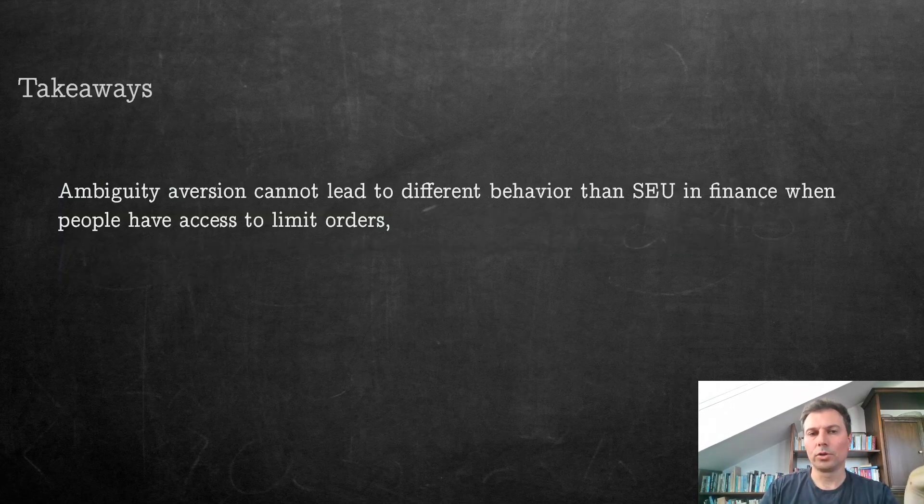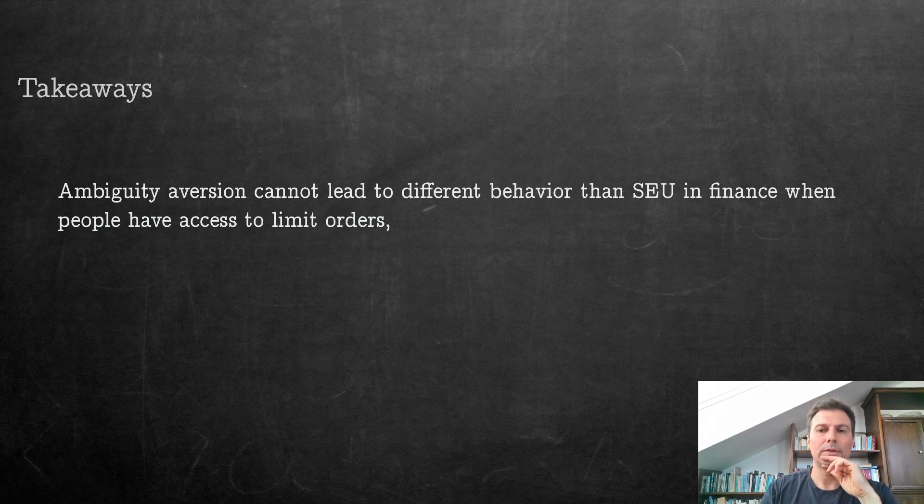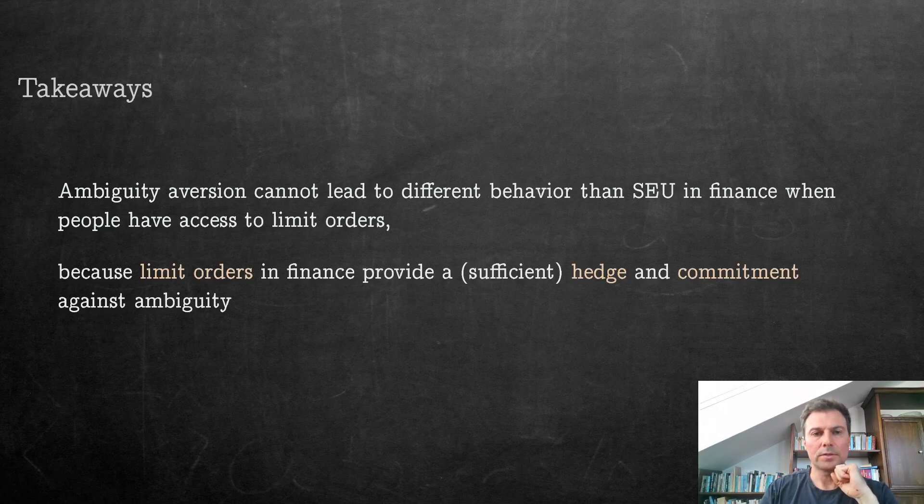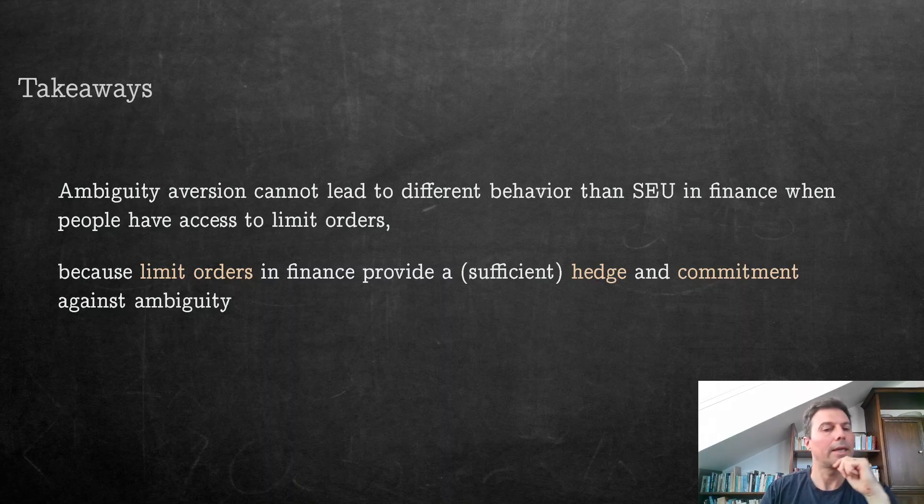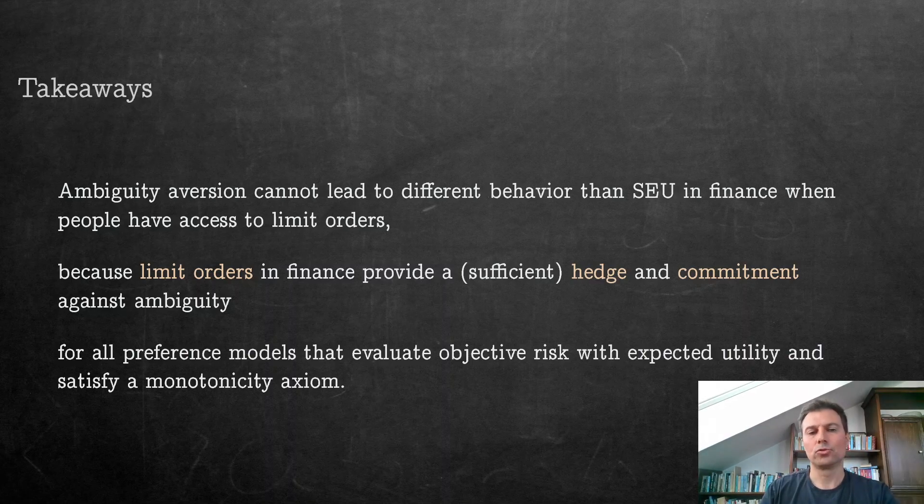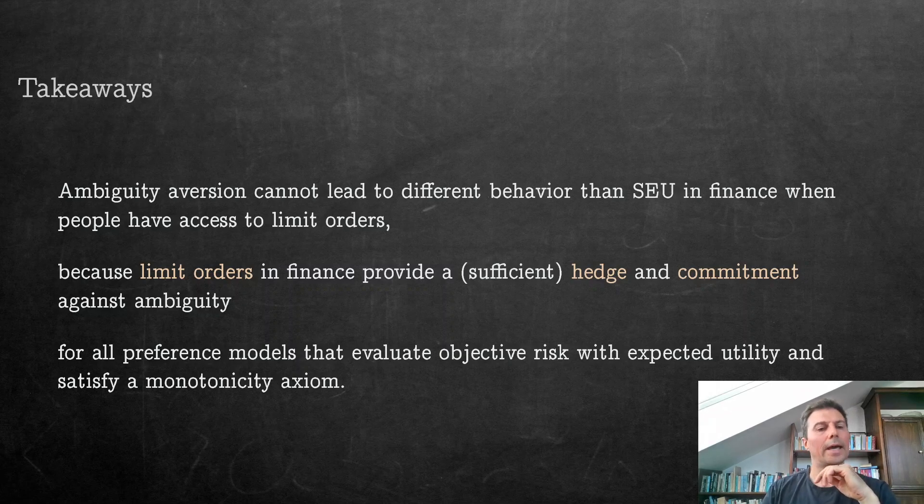So these are the takeaways. Ambiguity aversion cannot really lead to different behavior than subjective expected utility in finance when people have access to limit orders, because limit orders in finance provide a sufficient hedge and commitment against ambiguity. And that's true for all preference models that evaluate objective risk with expected utility and that satisfy a monotonicity axiom. I'm happy to discuss the consequences of this in what follows. Thank you very much.